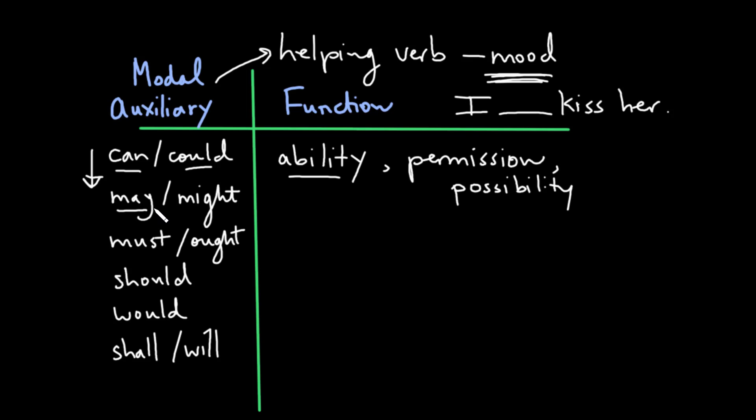May and might tend to express possibility. So possibility. There we go. I may kiss her. But again, also permission here. So if you say I may, then she may have given you permission to do that. Or maybe somebody else did. Maybe her father did. Although it really should be left up to her, shouldn't it? So we have possibility and permission. Might tends to possibility much more.